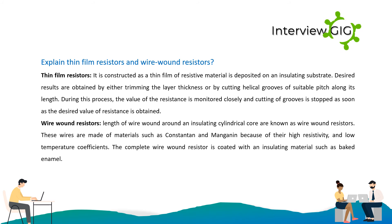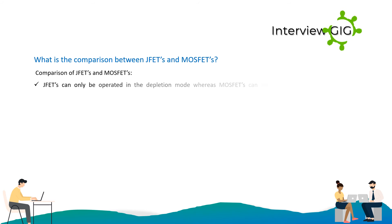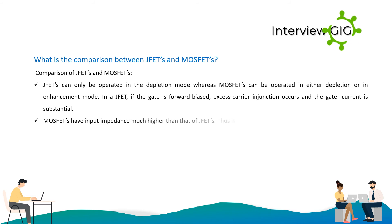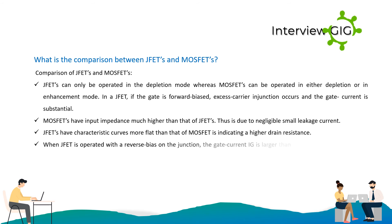What is the comparison between JFETs and MOSFETs? JFETs can only be operated in the depletion mode, whereas MOSFETs can be operated in either depletion or enhancement mode. In a JFET, if the gate is forward biased, excess carrier injection occurs and the gate current is substantial. MOSFETs have input impedance much higher than that of JFETs due to negligible leakage current. JFETs have characteristic curves more flat than those of MOSFETs, indicating a higher drain resistance. When a JFET is operated with a reverse bias on the junction, the gate current IGS is larger than it would be in a comparable MOSFET.